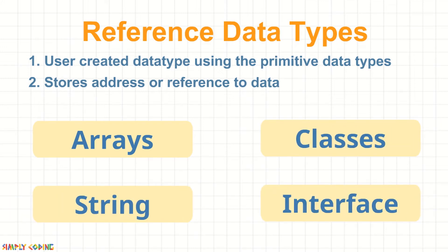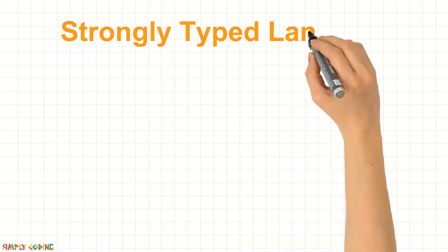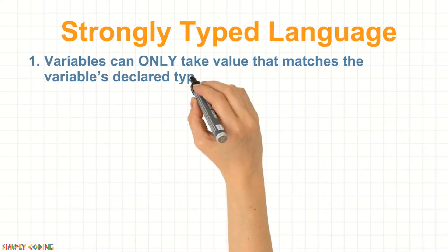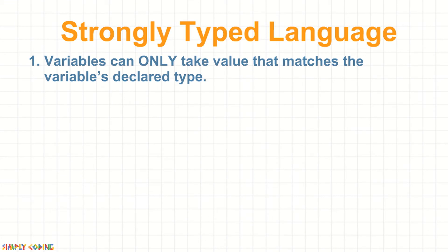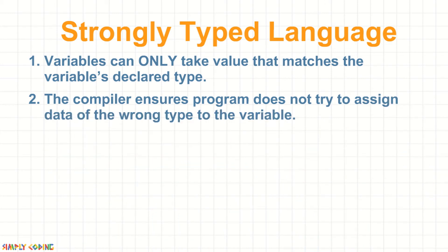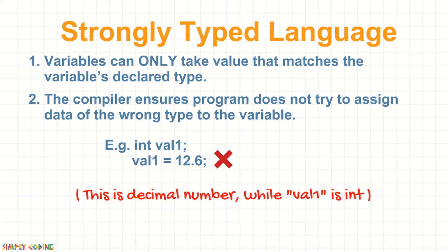Java is often called a strongly typed language. That is because variables can only take values that match the variable data type. The compiler ensures that the program does not try to assign data of the wrong type to the variable.